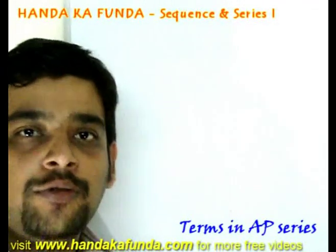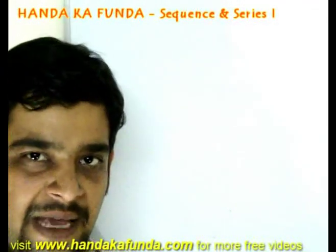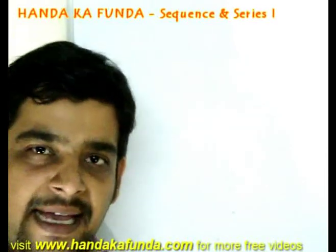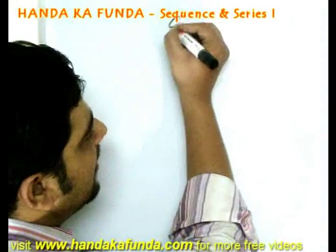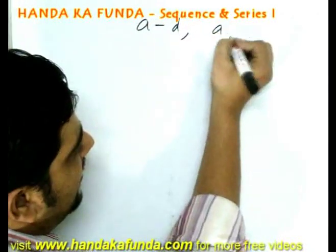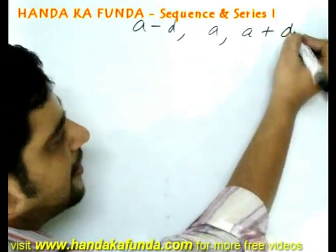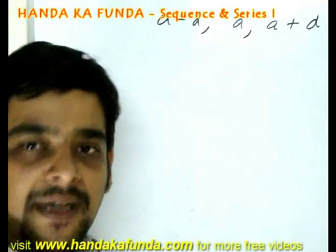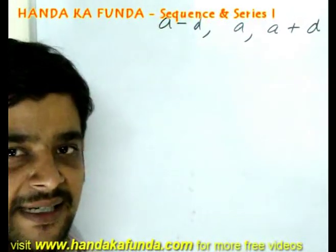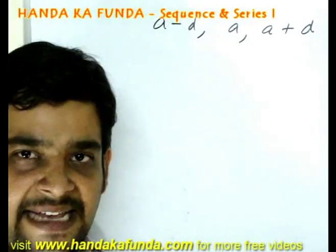Suppose a question asks you to assume three terms in an AP. You can very well assume them as a, a plus d, and a plus 2d, but it could be better if you assume a minus d, a, and a plus d. How does this help me? It helps me because if I add all three of them, d and d will cancel out with each other and I will be left with just 3a.